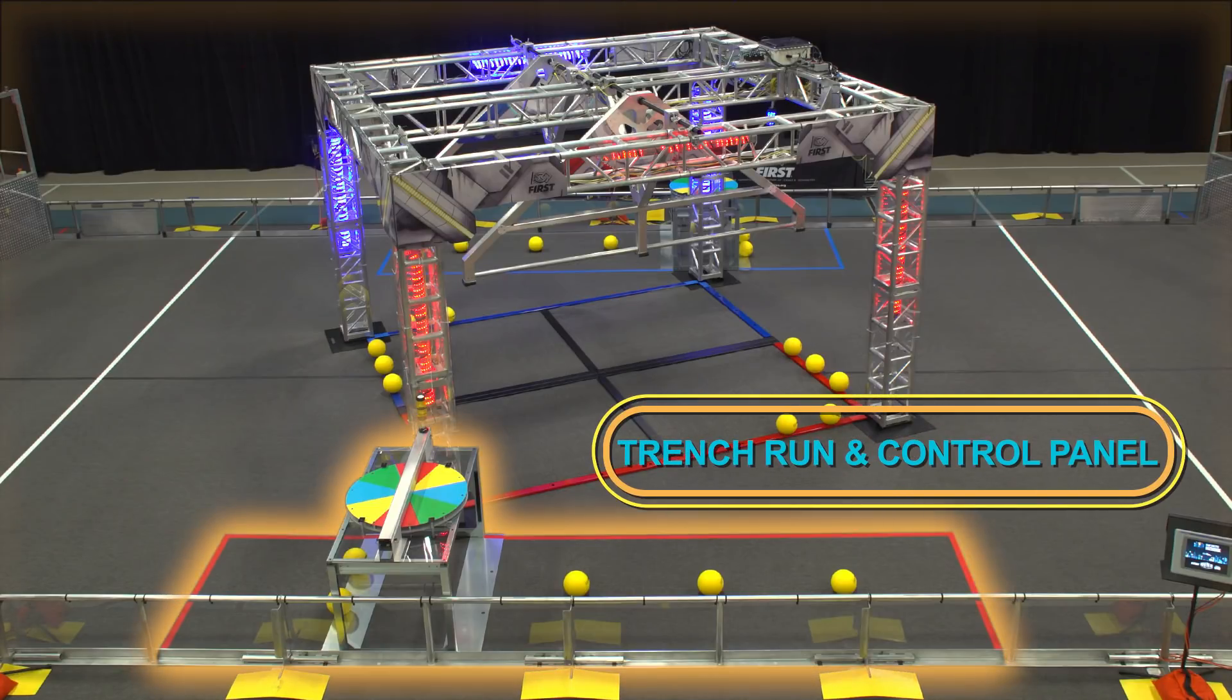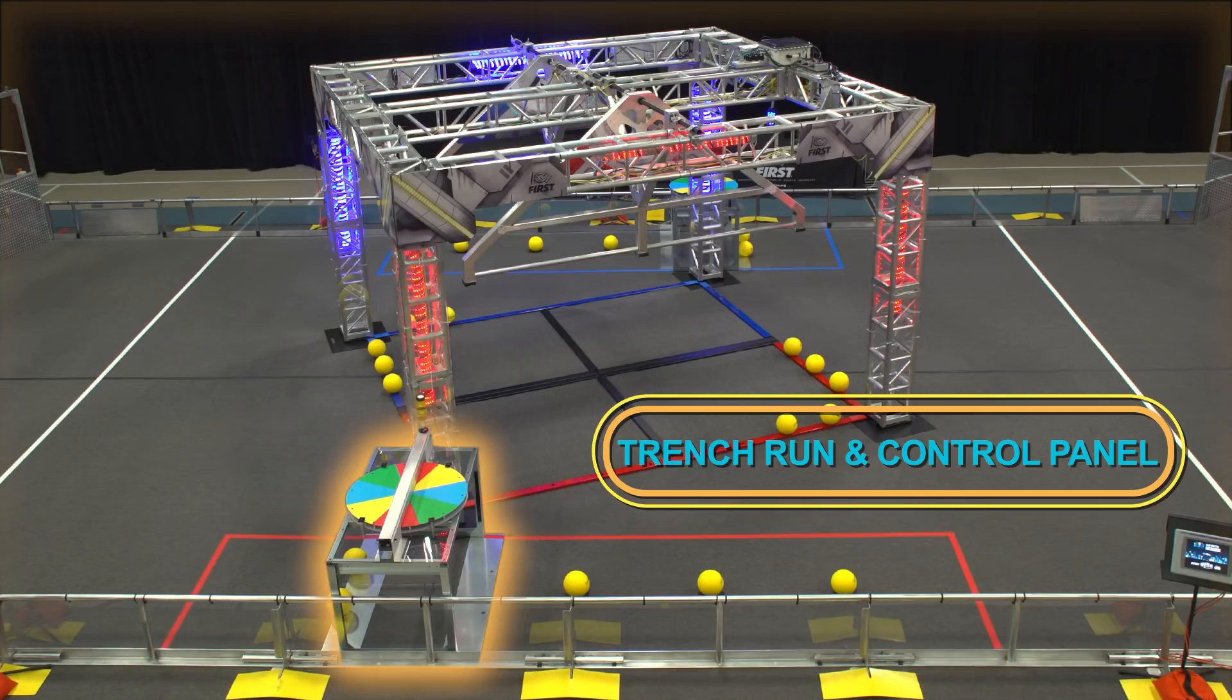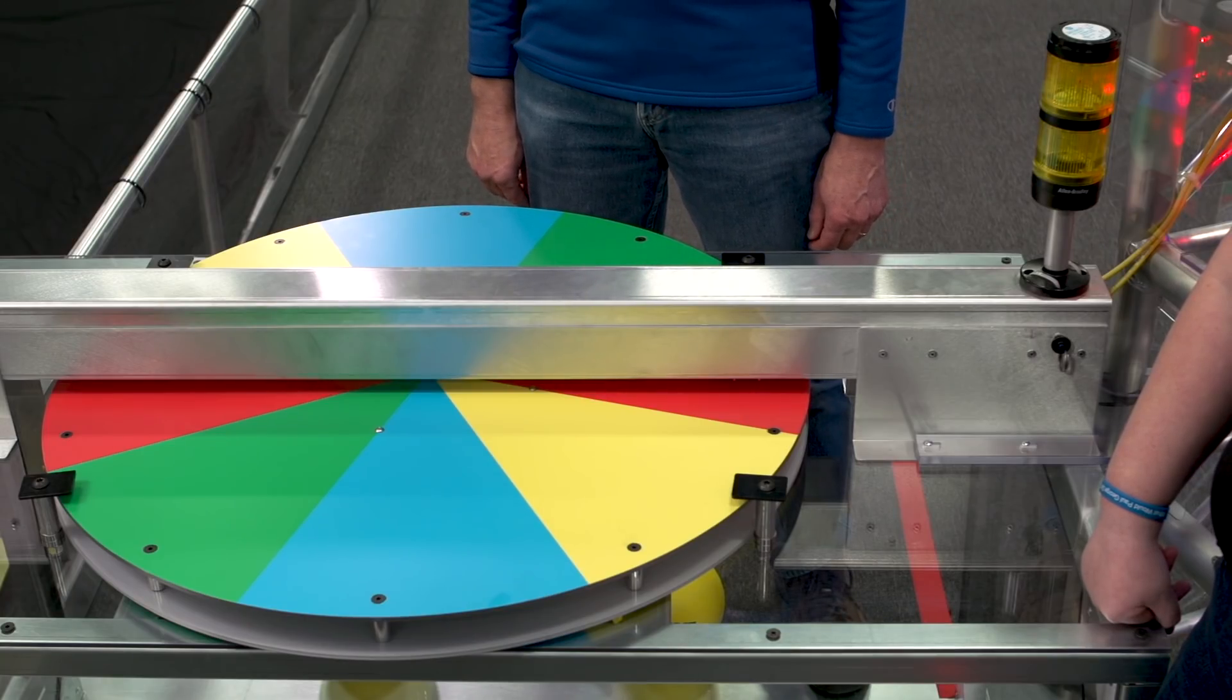The Trench Run is the protected zone around the Trench and the Control Panel. The Trench spans the Trench Run. The Control Panel is the circular disk that sits on top of the Trench.